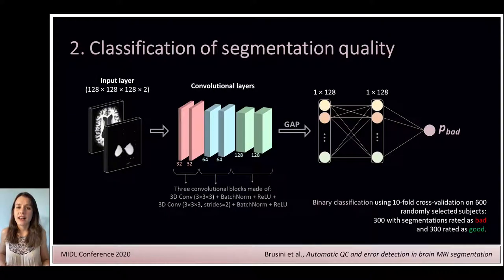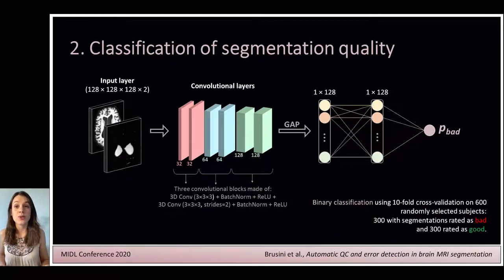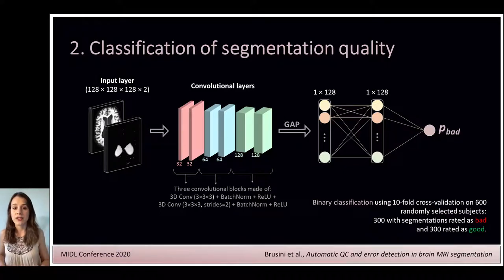We then decided to train a convolutional neural network to perform a binary classification in order to predict whether a segmentation is bad or not. We used both the original MRI scan and the derived 3D error map as inputs to this network. This convolutional neural network was trained in a supervised fashion using 10-fold cross-validation and 600 brain segmentations that had already been visually checked and labelled by experts as either good or bad segmentation results.